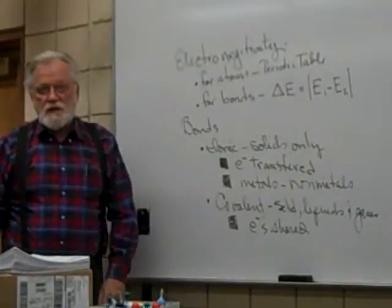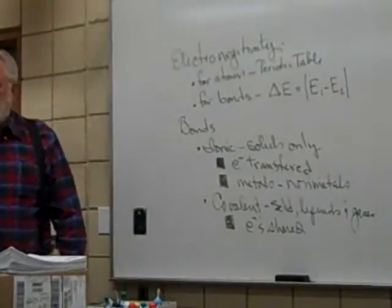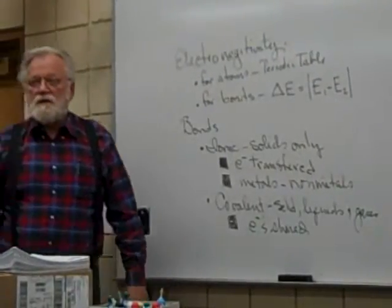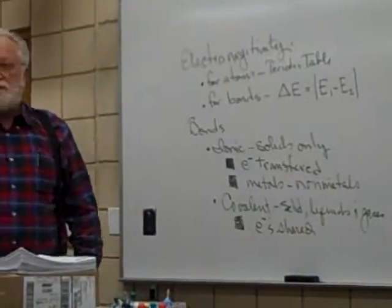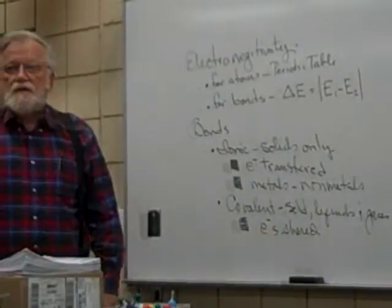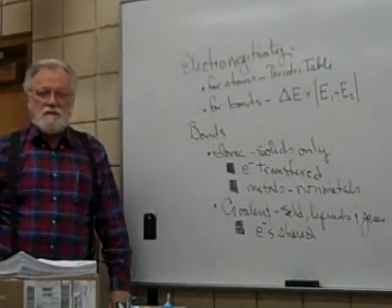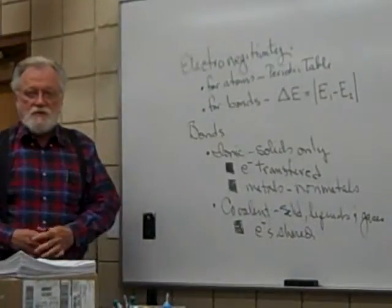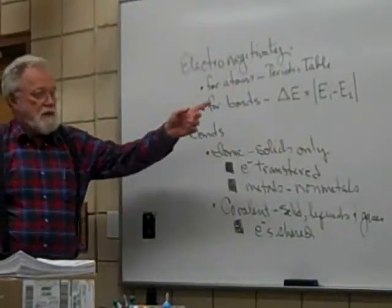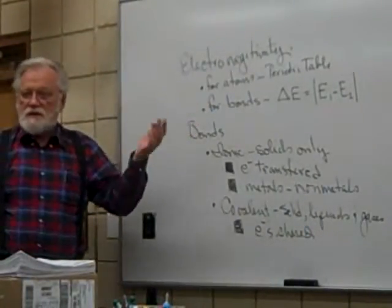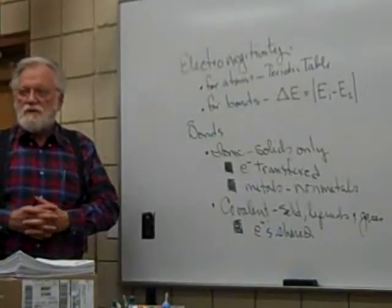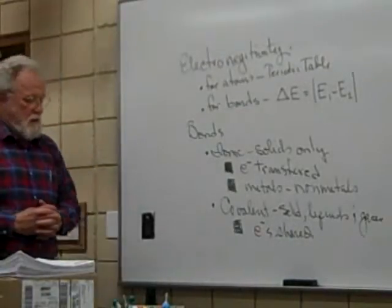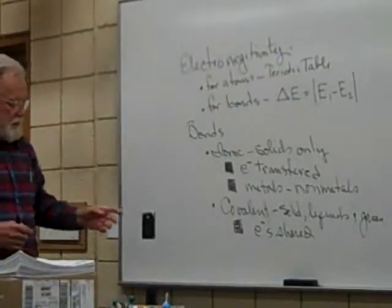Of course we know an ionic bond exists only in the solid state. It does not exist in the gaseous state. In other words, one of the elements is going to be a non-metal, and the other is going to be a non-metal.